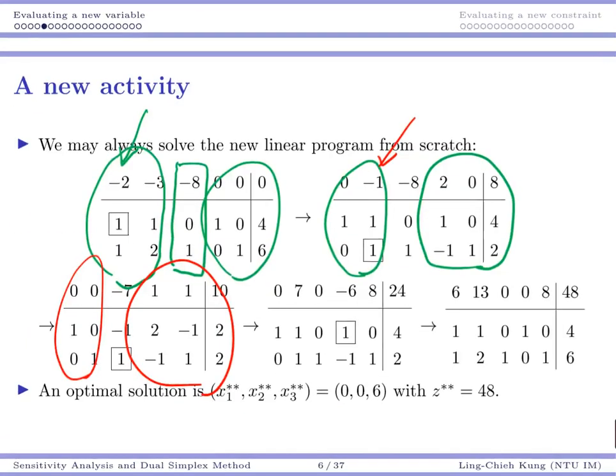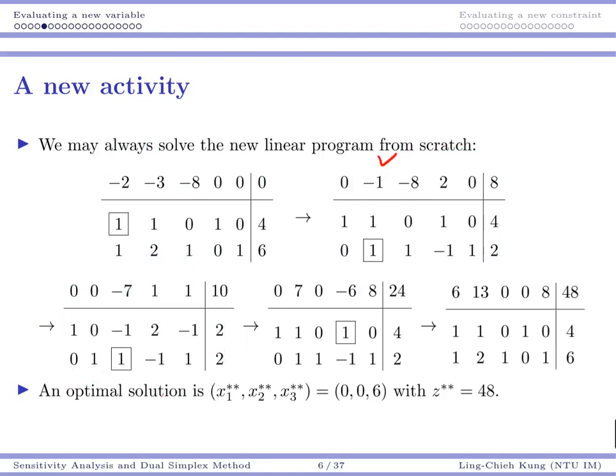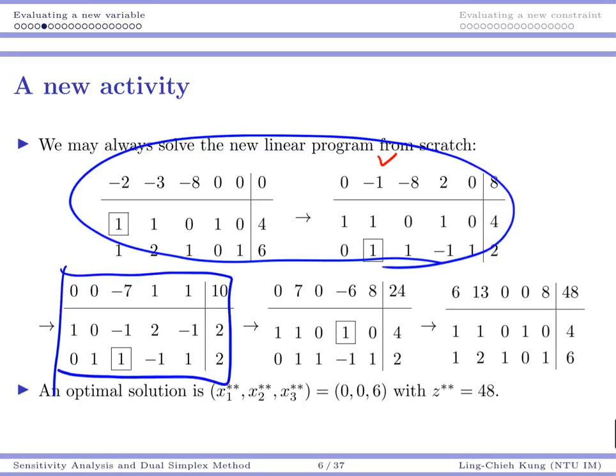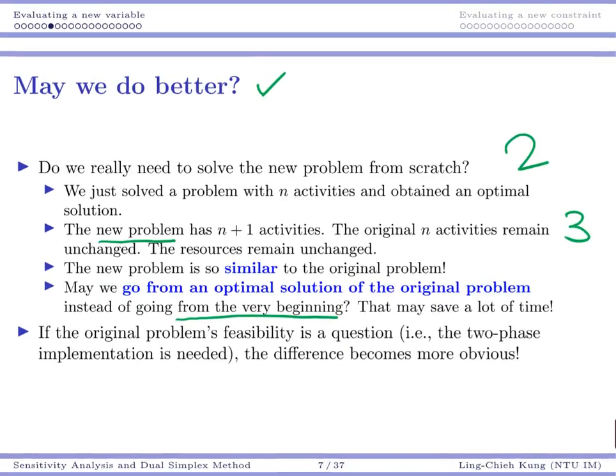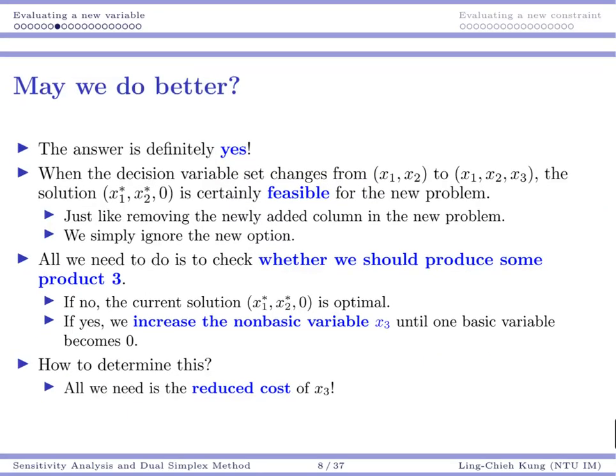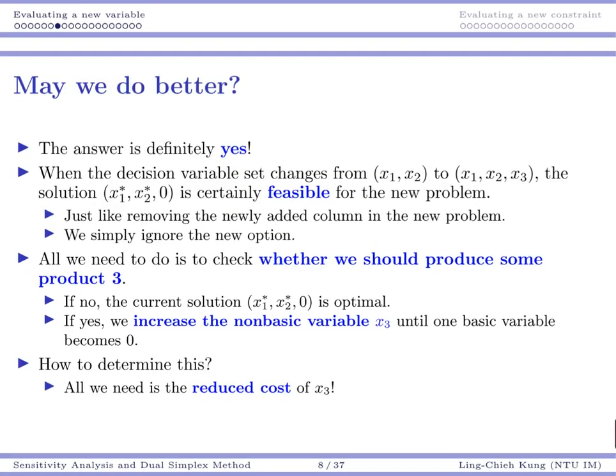Basically, there is really no reason to do the previous two iterations. It seems we should somehow start from our third tableau or from our optimal tableau from our original problem. The original problem is so similar to our new problem. We should somehow utilize what we just did from the original problem. We should go from the optimal solution from the original problem. May we do that? The answer is definitely yes.